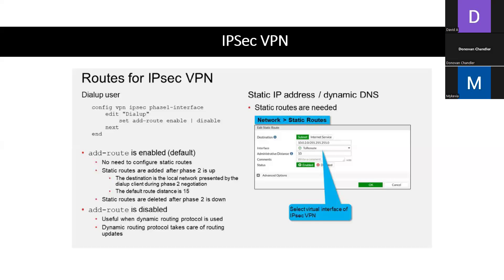Let's talk about add route — if it's enabled or disabled. Whenever you set the remote gateway when setting up a phase one and you disable add route, FortiGate does not add a static route automatically. In this case, a dynamic routing protocol is used between the remote peers to exchange routing information — BGP, OSPF, or whatever dynamic routing protocol works.